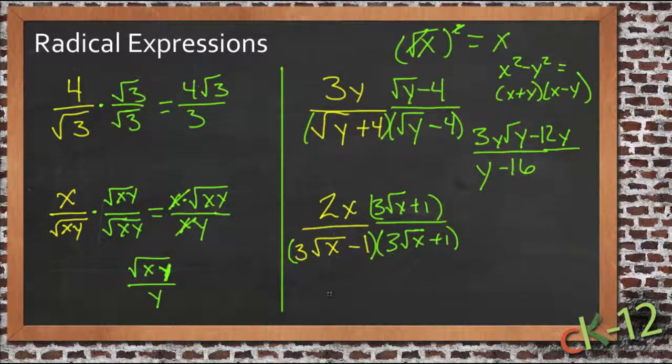So then here, we have 3 times 3, that's 9, and our square roots go away, so just 9x, and then we have the middle term will cancel out, and we'll have negative 1 times 1, that's negative 1.